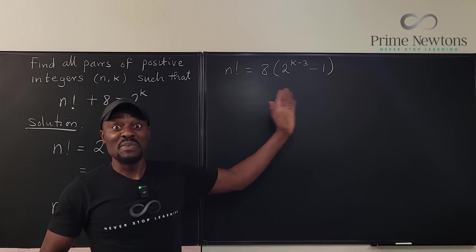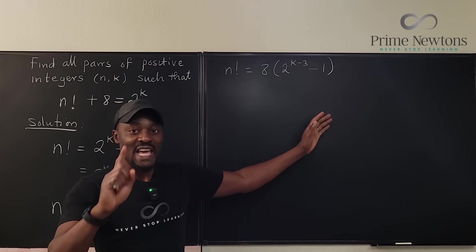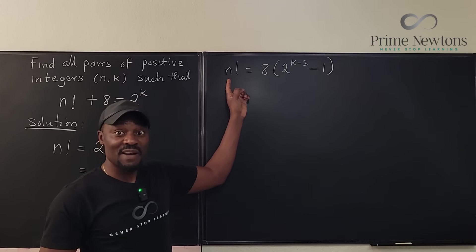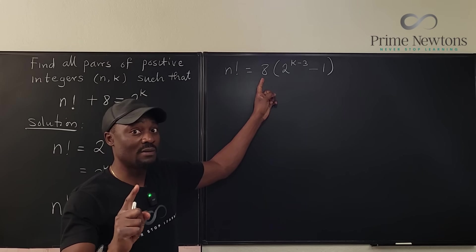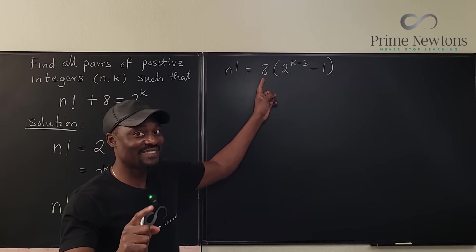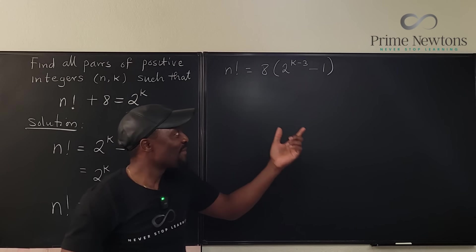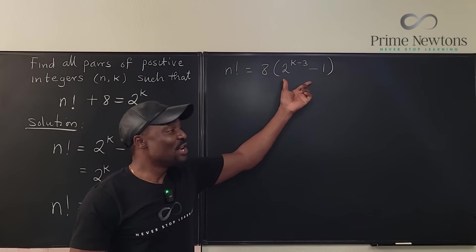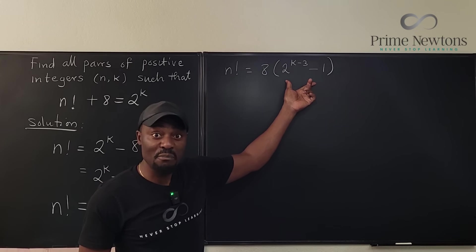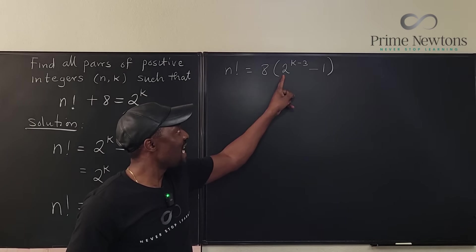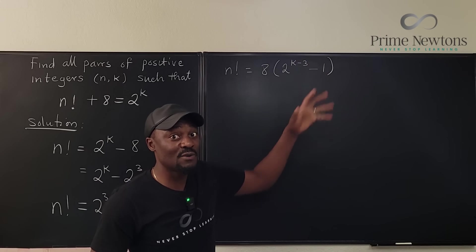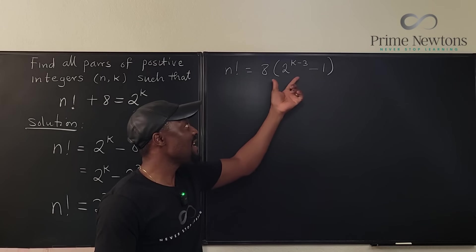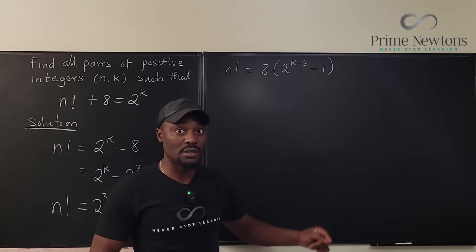So what does this mean? It means that n factorial is a multiple of eight. The second thing is the number eight is multiplying an odd number. Why? Because any power of two is even, and any even number minus one is an odd number.